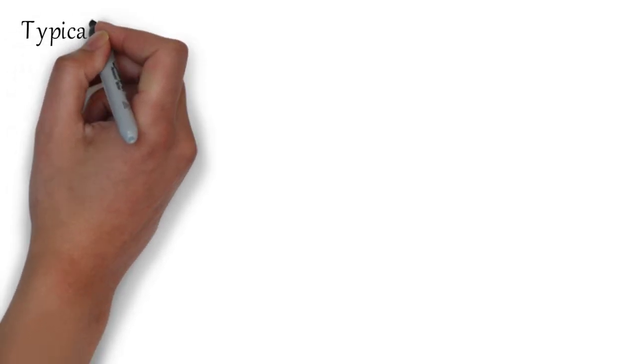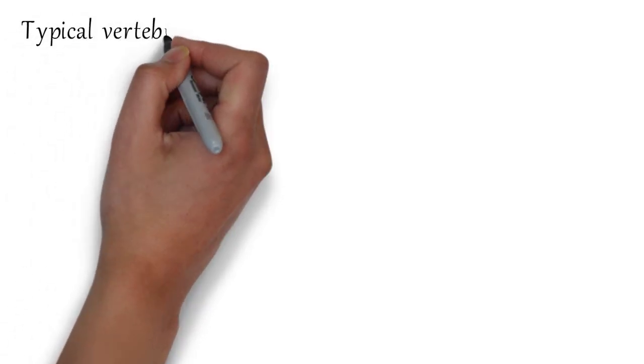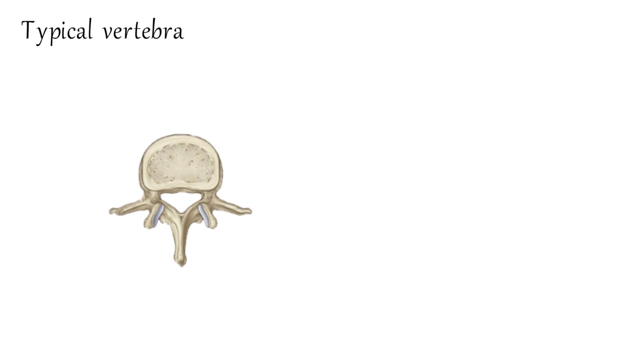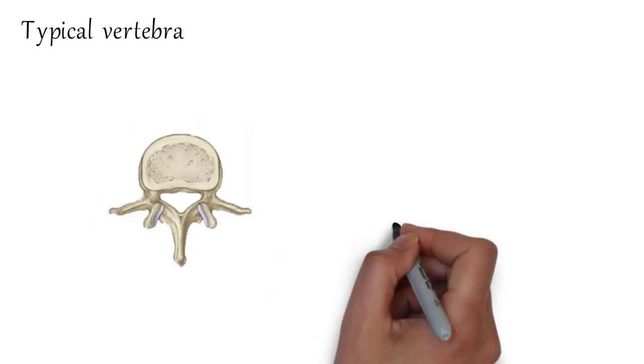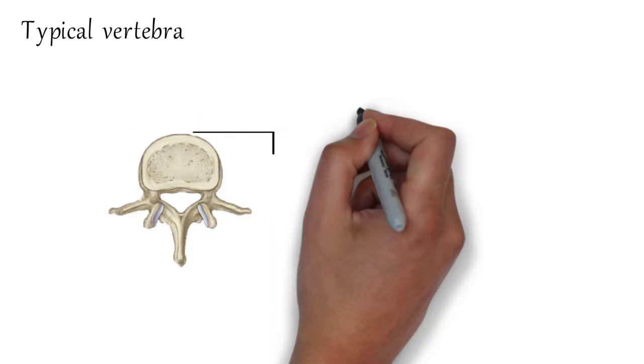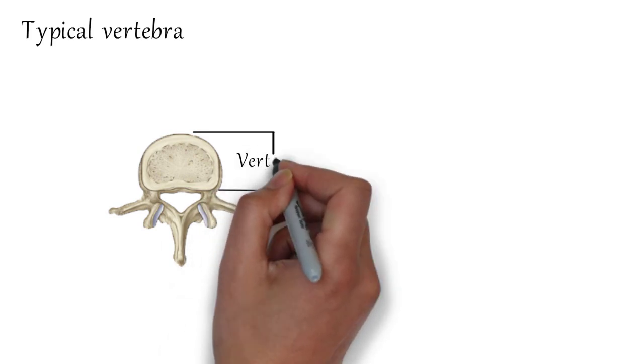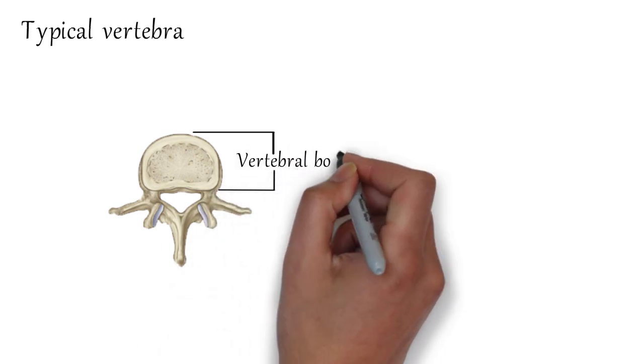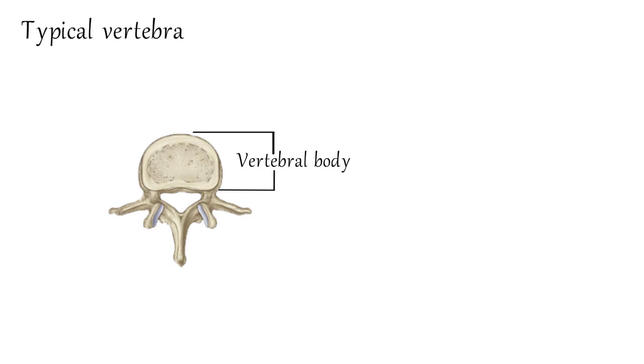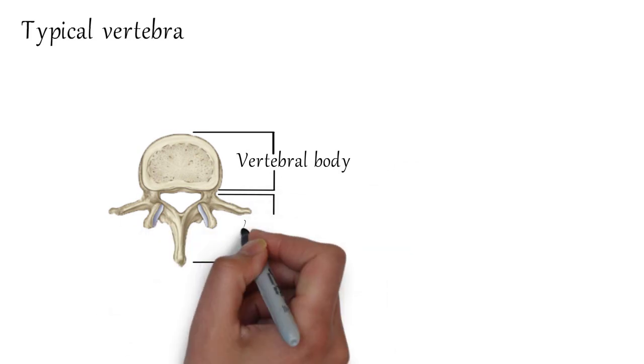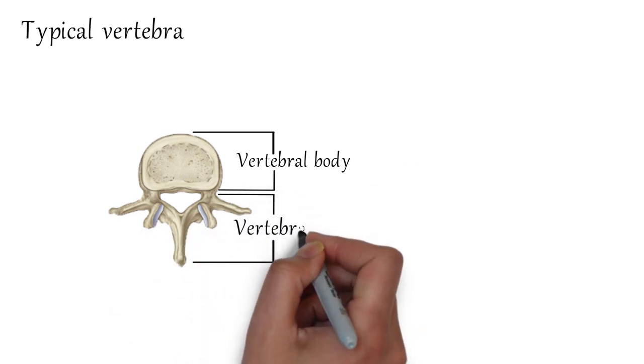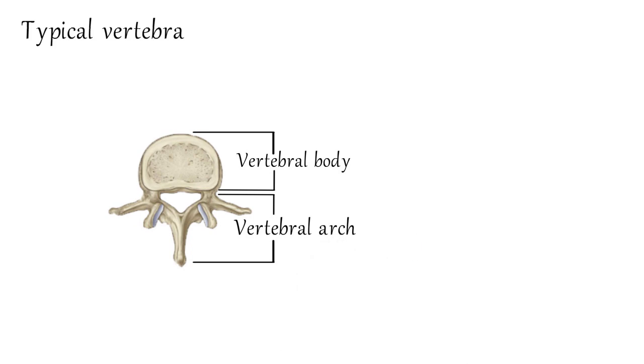Now let's discuss the typical vertebra. This is the vertebral body, which is the weight-bearing part of the vertebra. This is the vertebral arch. It forms the lateral and posterior parts of the vertebral foramen.